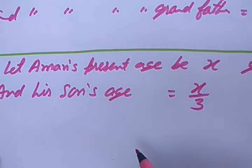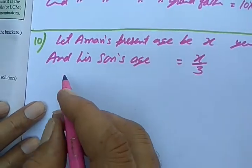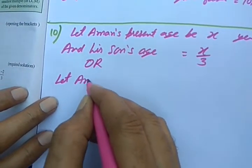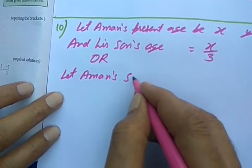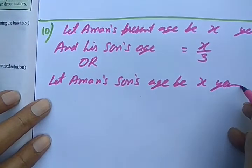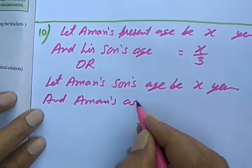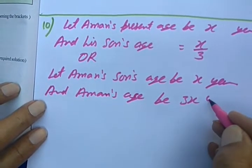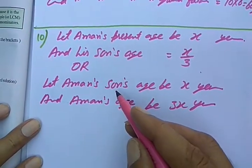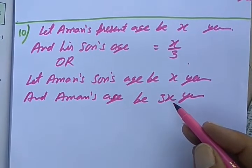This is one way of doing, otherwise if you take the other way, then take his son's age first. You may also take or let Aman's son's age be X years and Aman's age be 3X years. Either of the two methods you may do it. See, if you have taken Aman's son's age to be X and Aman's age to be 3X, then what was their age ten years ago?